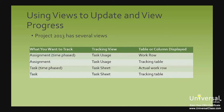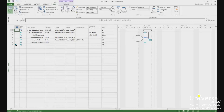Project 2013 has several views, as we have already discussed in this course. These views can be used to enter progress and status updates, as well as to view progress on your project. On the screen here is a chart that lists the tracking views you can use to enter and view tracking information — including what you want to track, what tracking view to use, and the table or column displayed. The Task Usage view can be found by clicking on the View tab and then going to Task Usage.